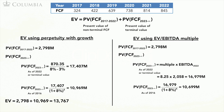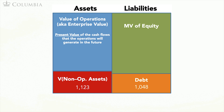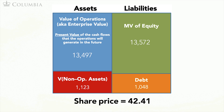Using this alternative calculation of terminal value or residual value, the enterprise value as of 2016 is given by this formula. Note that the present value of the non-terminal cash flows is the same as before, as we are only changing the way we compute the terminal value. Plugging in an enterprise value of $13,497 million in the market value balance sheet leads to an equity value of $13,572 million and a share price of $42.41.